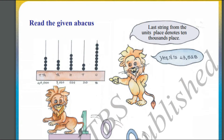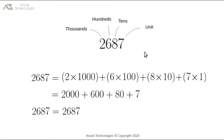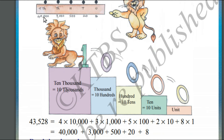This is the Abacus device. Here we have units place, tens place, hundreds place, thousands place, and ten-thousands place. In the units place we have got 8 beads. In the tens place we have got 2 beads — each bead equals 10, so 10 plus 10 equals 20. In the hundreds place we have got 5 beads — each bead represents 100, so 100 plus 100 plus 100 plus 100 plus 100 equals 500. The same principle follows for the remaining columns. So the number is represented as 40,000 plus 3,000 plus 500 plus 20 plus 8 equals 43,528.